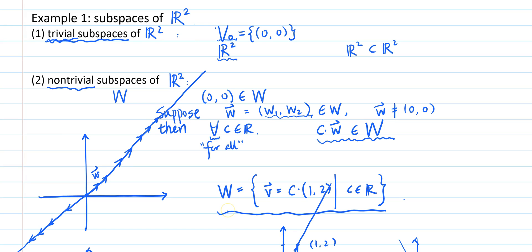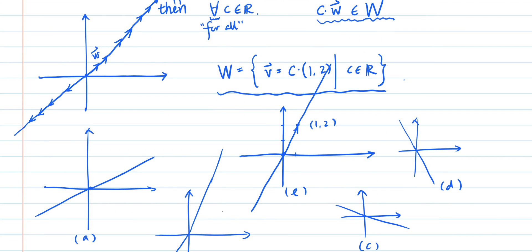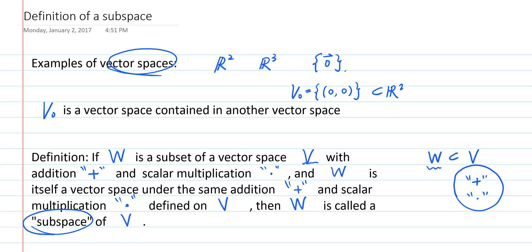The take-home message of this example is that the subspaces of R2 are: the set containing only the zero two-tuple, R2 itself, and lines through the origin. In later videos, we are going to explain how to prove that a subset of a vector space is a subspace.